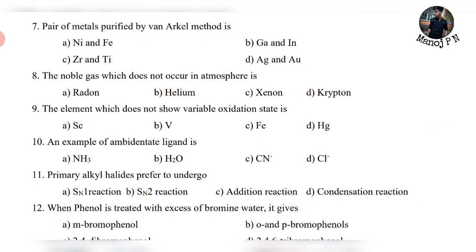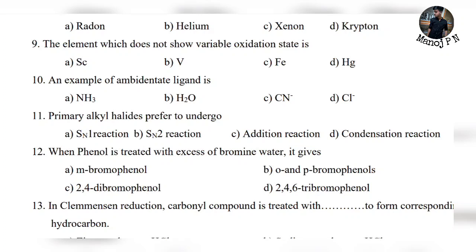Noble gas which does not occur in the atmosphere: helium, xenon, and krypton are present in the atmosphere, but radon is not present in the atmosphere — that is the answer. Ninth question: the element which does not show variable oxidation state is scandium, atomic number 21. Scandium has no partially filled d-orbitals in the ground state, unlike vanadium (23), iron (26), and mercury (80) which show variable oxidation states.